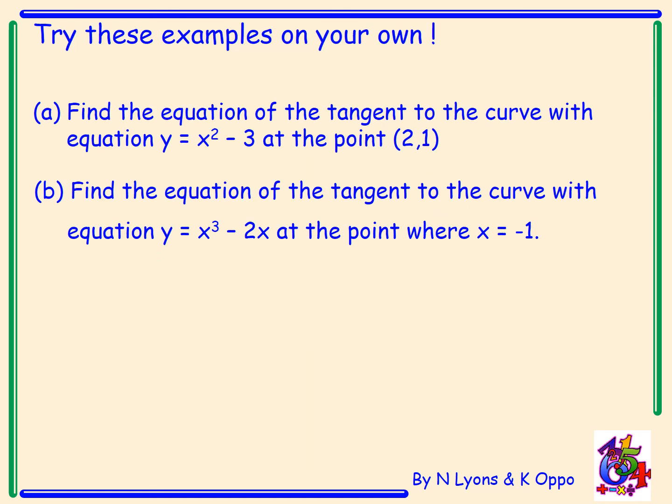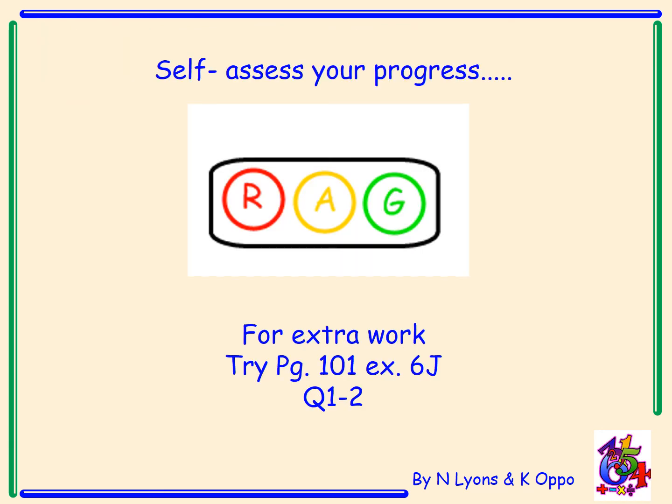Now try these examples on your own — please pause the video. The answers: for (a) the equation of the tangent is 4x minus y equals 7, and for (b) the equation of the tangent is x minus y equals negative 2. Now please self-assess your progress. For extra work, turn to page 101, exercise 6j, and try questions 1 and 2.